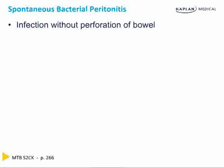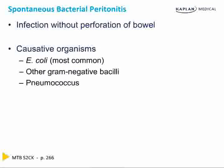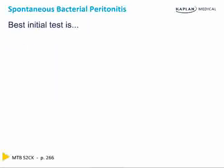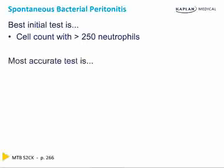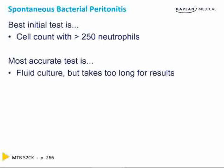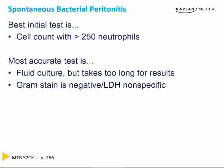Spontaneous bacterial peritonitis is an infection of the abdomen without perforation of the bowel. The organisms that cause it are E. coli, being the most common, other gram-negative bacilli, pneumococcus, and anaerobes, which are rare. The best initial test is a cell count of the fluid showing greater than 250 neutrophils. The most accurate test is a fluid culture, but we don't wait for the culture because it takes too long. Gram stains are sometimes negative, and LDH is nonspecific.